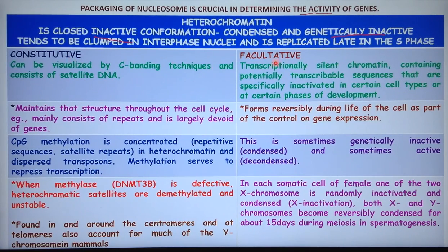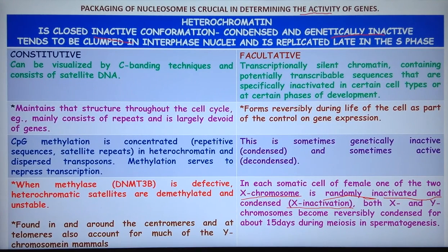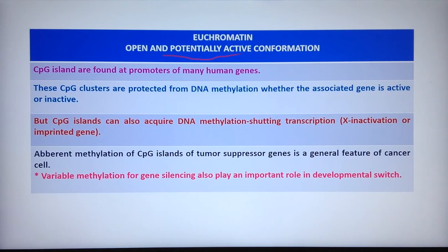Facultative heterochromatin is normally silent but can achieve a different state. It contains transcriptionally silent chromatin with potentially transcribable sequences that are specifically inactivated in certain cell types or at certain phases of development. It forms reversibly during the cell cycle as part of gene expression control — sometimes genetically inactive and condensed, sometimes active and decondensed. X inactivation is a classic example of facultative heterochromatin.